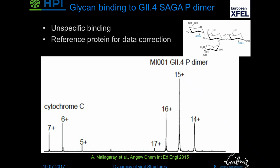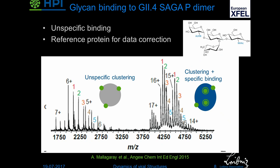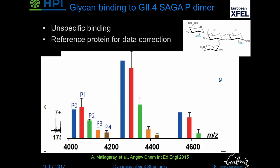First of all we have to look at how our P-dimer looks, and we also have a reference protein, cytochrome C. When we then put in our histoblood group antigen B, we get a spectrum — it's pretty messy. You see a lot of glycans sitting on the P domain, but you also see that the cytochrome C, which is not supposed to bind this B antigen, takes a lot of glycans along. The reason for this is the electrospray process: we have droplets of a certain size, and there is a chance that some free glycans are in that very same droplet and just ride down onto our protein. That's why we have the reference protein to correct for that.